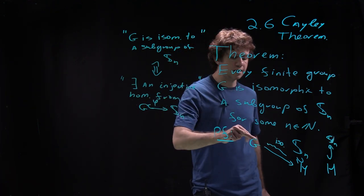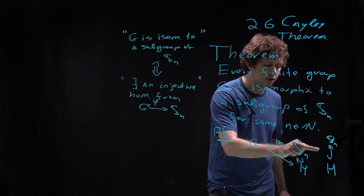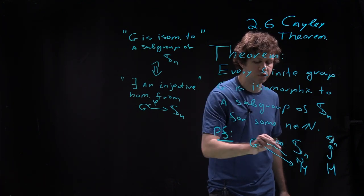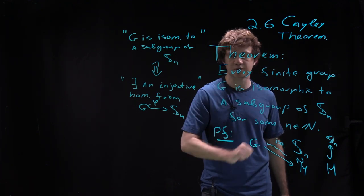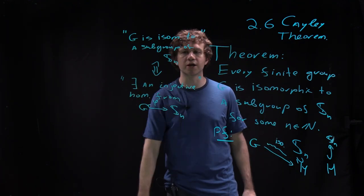Clearly if some element goes to identity under this composition, we know that the second one is injective, so it will go to identity under this composition, but this is an isomorphism, so it's identity. That's why we got an injective homomorphism.